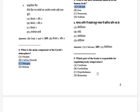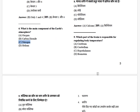Which part of the brain is responsible for regulating body temperature? The options are: cerebrum, cerebellum, hypothalamus, and brain stem. The answer is hypothalamus.